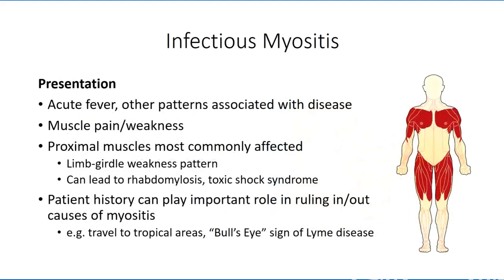As a general rule, whenever a patient presents with acute fever along with muscle pain and weakness, infectious myositis of some form may be suspected. The proximal musculature is most commonly affected, demonstrating a limb-girdle distribution pattern, though this is certainly not an exclusive finding. Patient history can assist with ruling out or focusing in on types of infectious diseases. If a patient has been to a tropical area, certain parasites endemic to the region and known to result in myositis should be investigated. Other physical signs may also provide clues, such as the bull's eye sign indicative of Lyme disease, suggesting Lyme myositis.